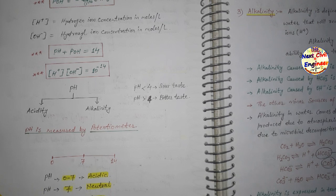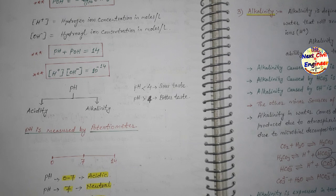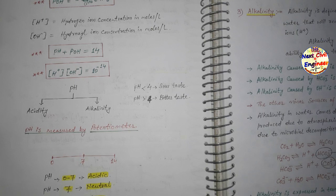If water is acidic (low pH), problems like digestive issues and corrosion of pipelines can occur. Regarding indicators used in the lab for pH: methyl orange and phenolphthalein are two indicators. We will next see a table discussing the pH range and final colors produced by each indicator, followed by the topic of alkalinity.